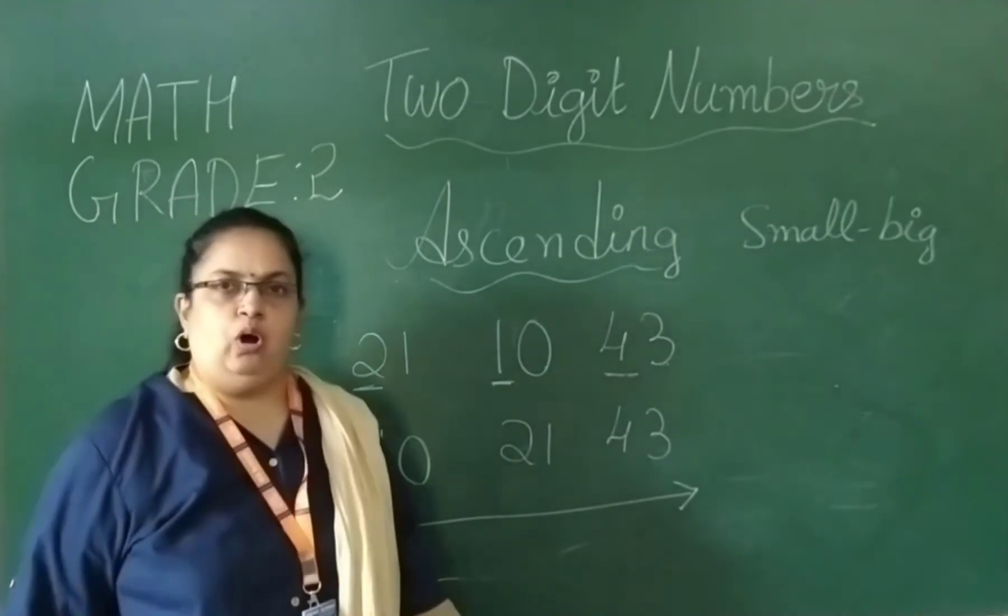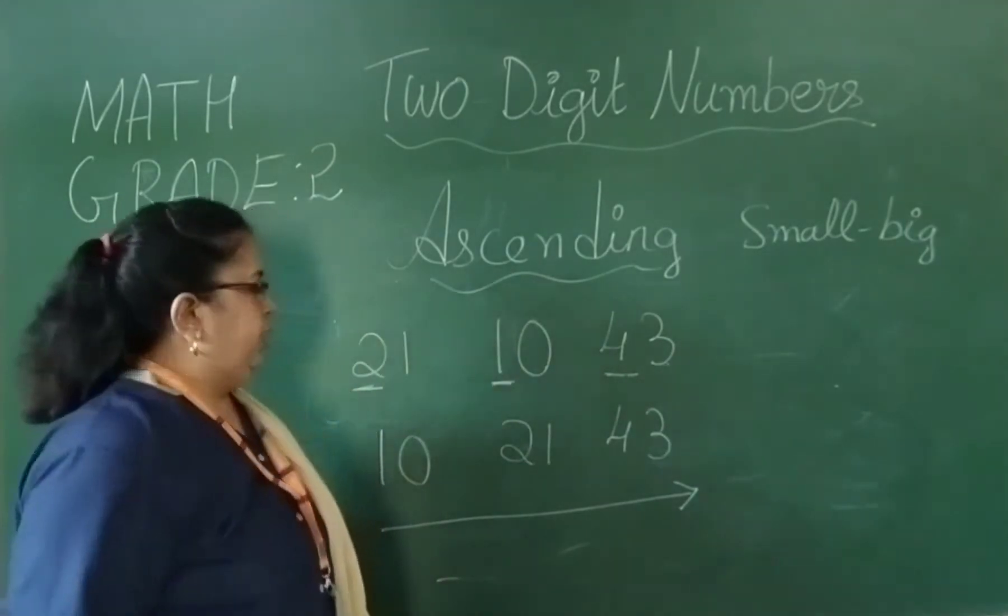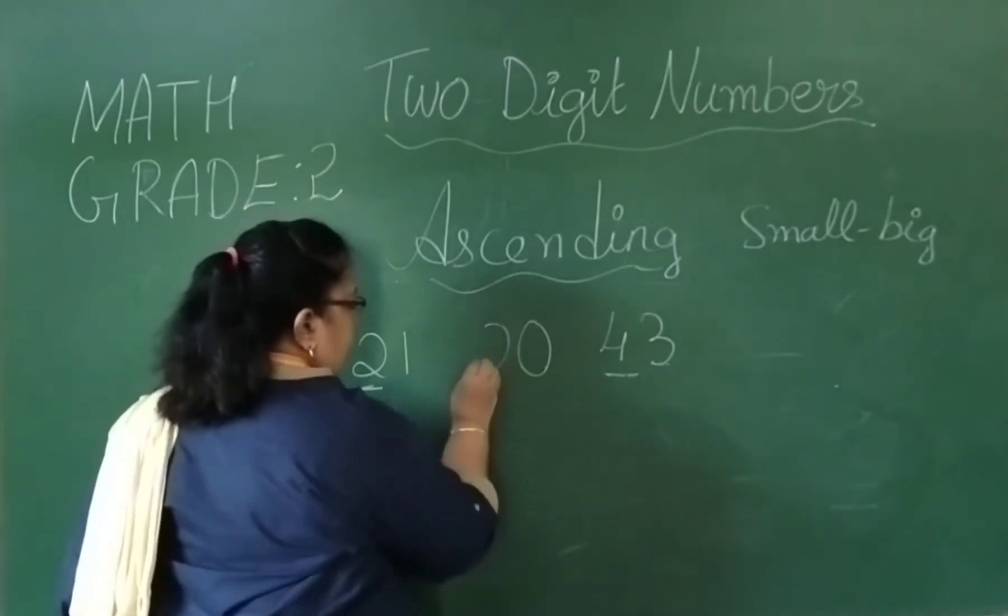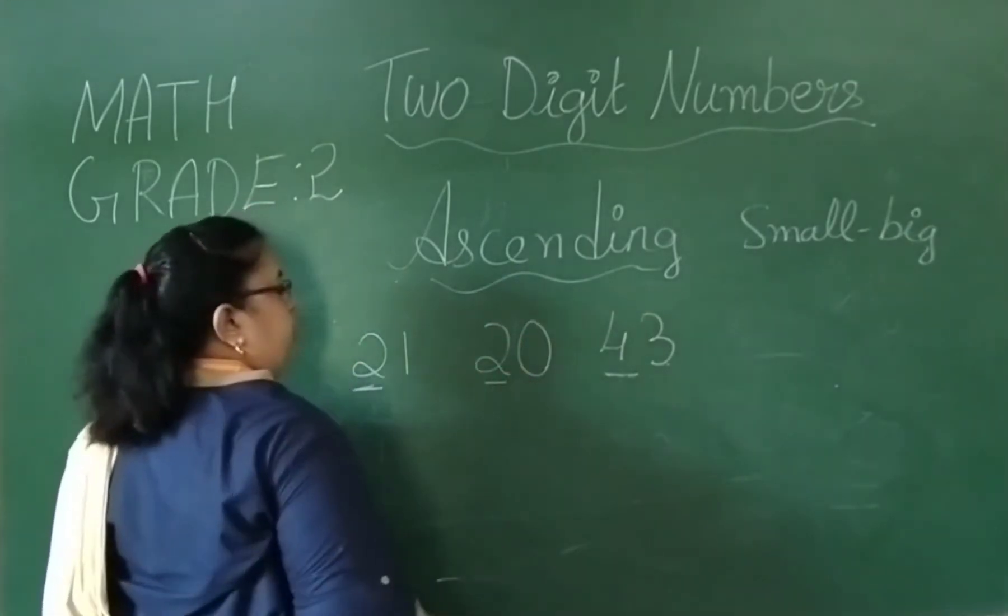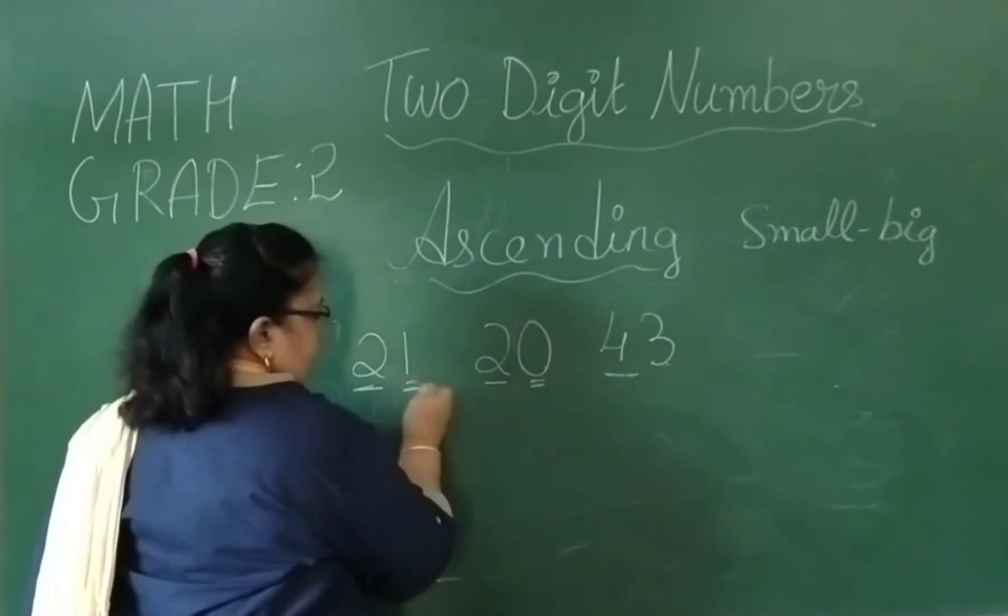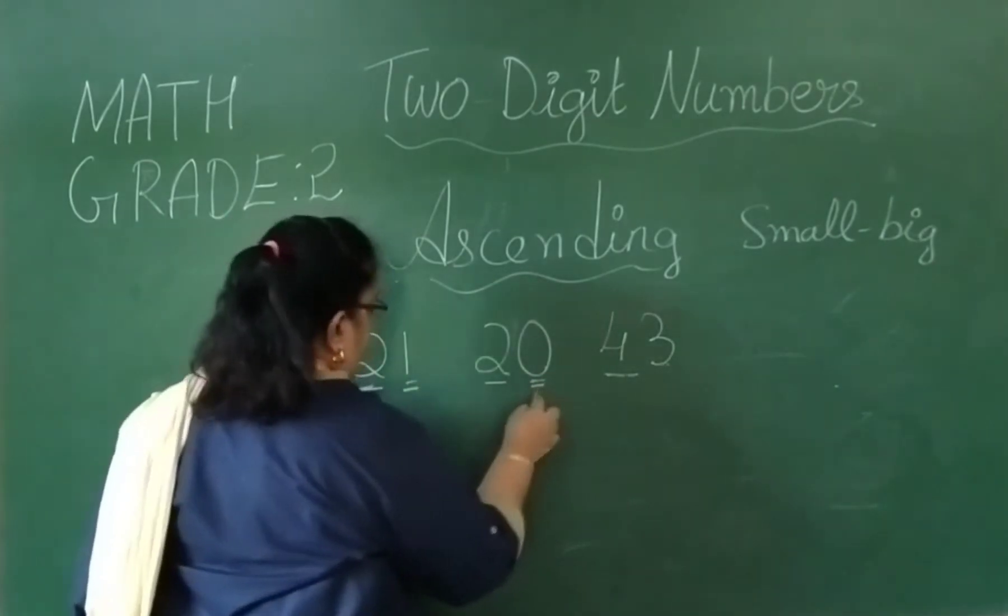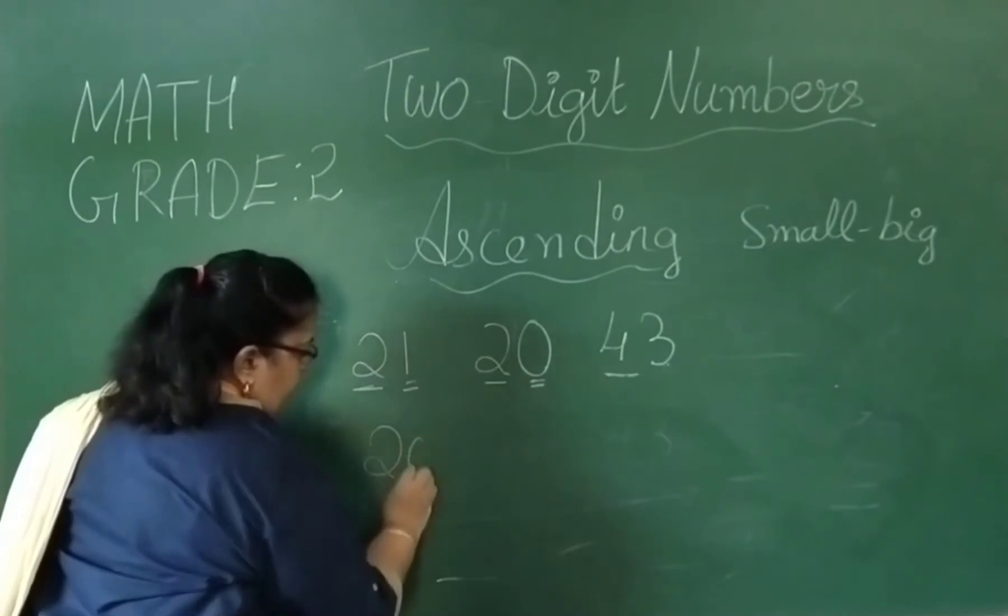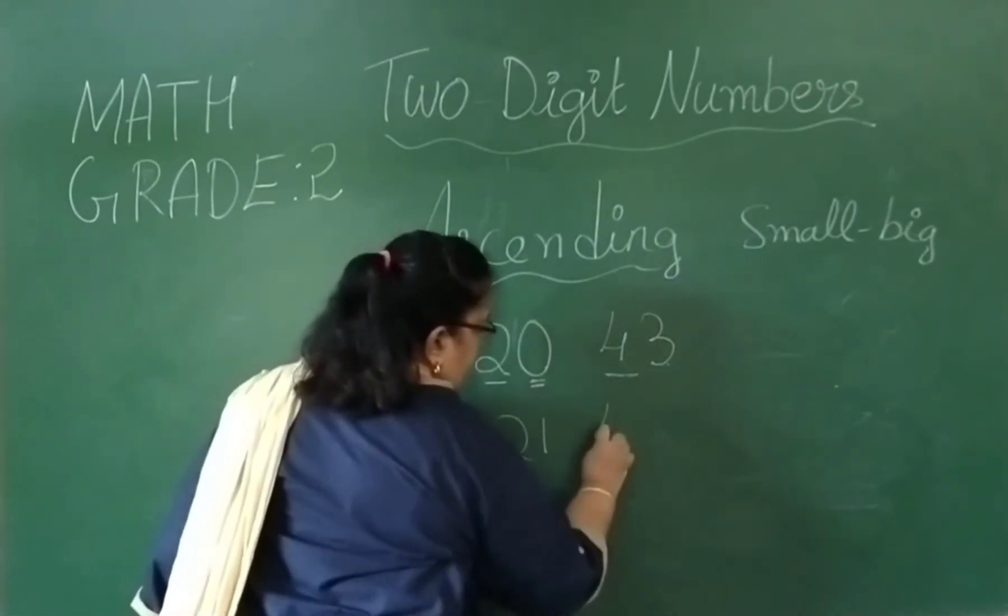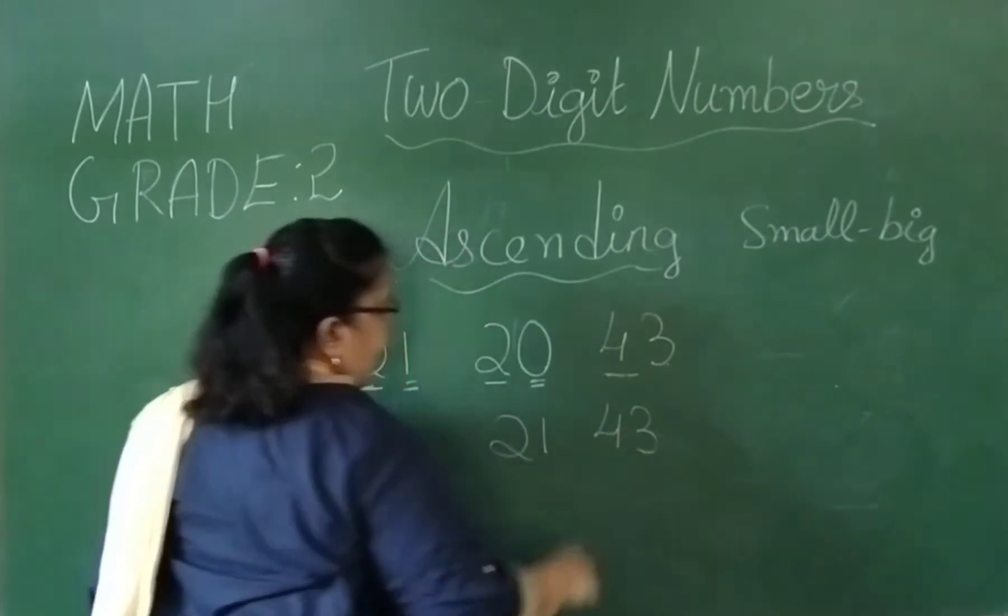If you are getting here 10, 21, and 43, take out the first digit number. What comes in order? 1 you are right, 10. Next you can write 21, next you can write 42. This is the order form, that is from small to big.